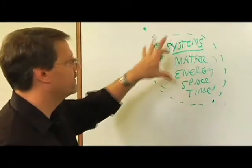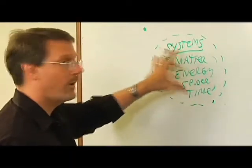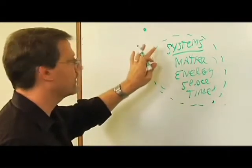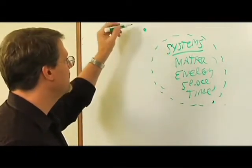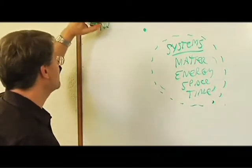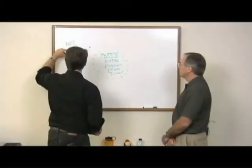Gödel says everything that is a system requires something outside the circle. So this also means what's out here is not a system.